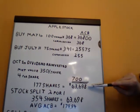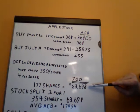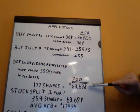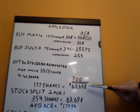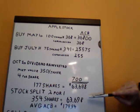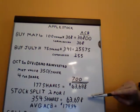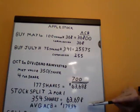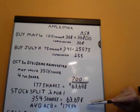A few weeks after, Apple decides to do a stock split. We will receive two shares for every share we own, so now we own 354 shares with an ACB of $63,698. The average ACB per share is $179.94.